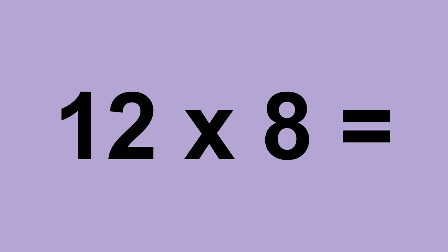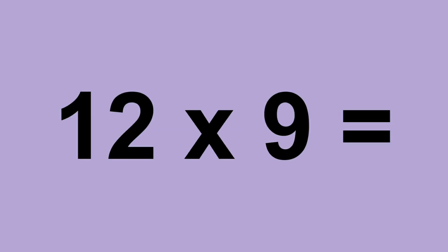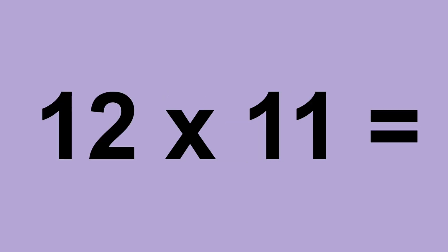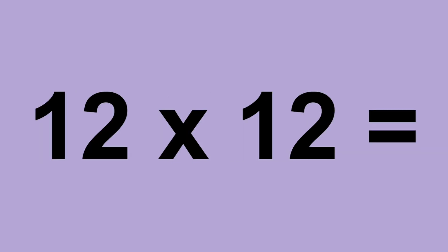Twelve times eight equals ninety-six. Twelve times nine equals one hundred and eight. Twelve times ten equals one hundred and twenty. Twelve times eleven equals one hundred and thirty-two. Twelve times twelve equals one hundred and forty-four.